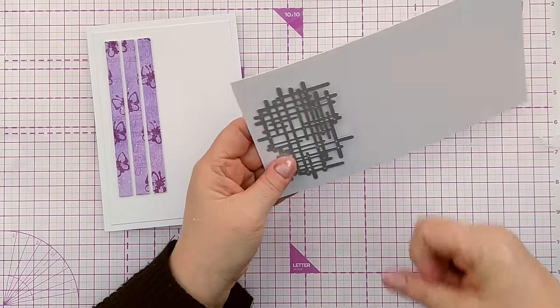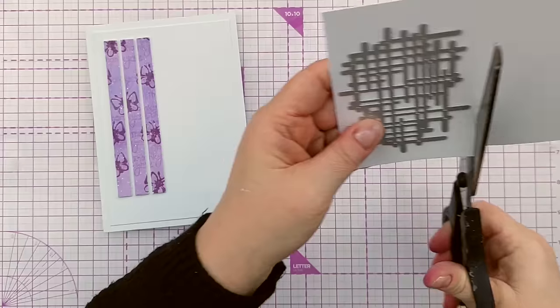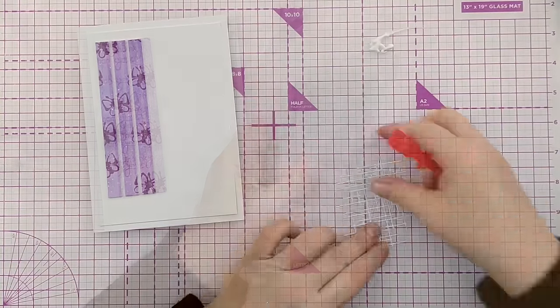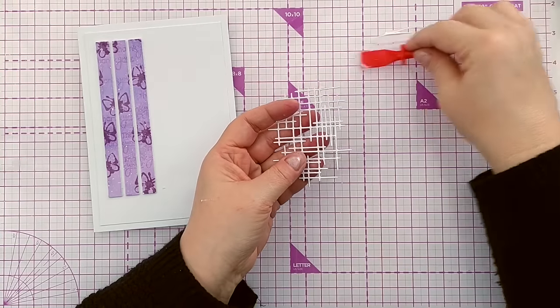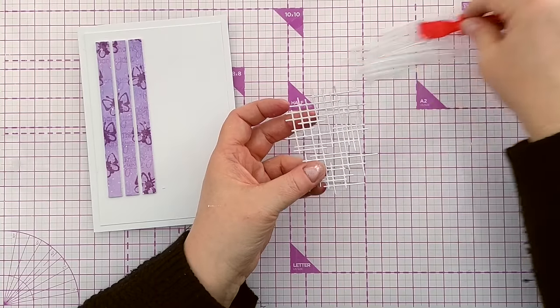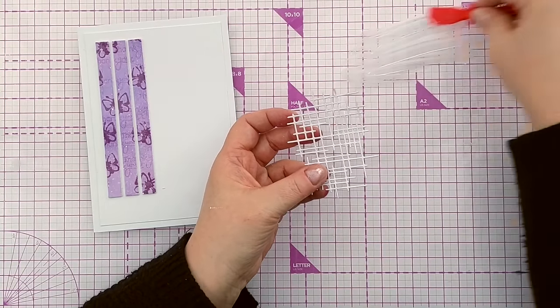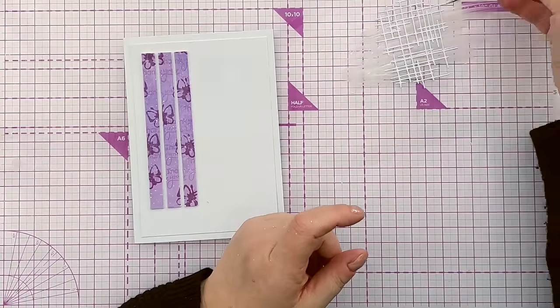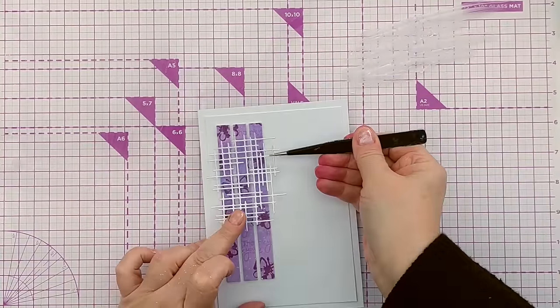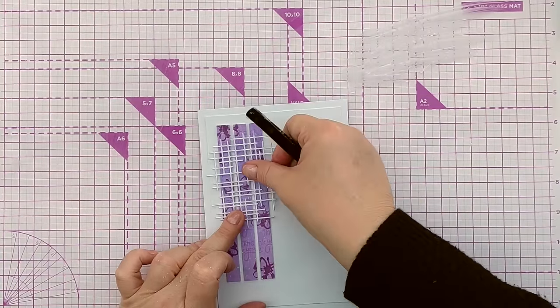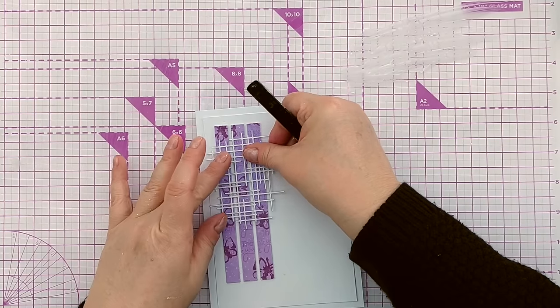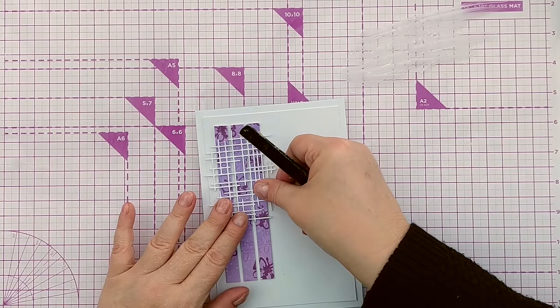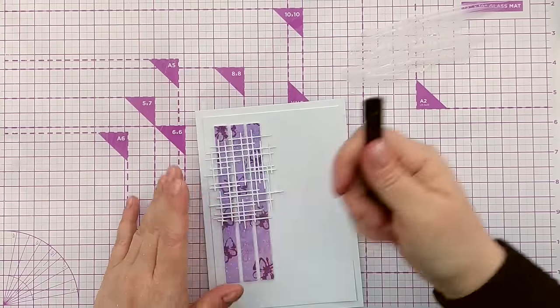So there we have some nice dimensional shiny background strips. The next thing I want is my landing spot for my focal image. And I'm going to use this neck die. So I've got my little neck die here. And I want to put a bit of glue in the middle area because that's where it's going to sit on my background here. So I'm going to pop it up there. And you can still see the background through it. You can line it up nicely because of all the vertical lines.